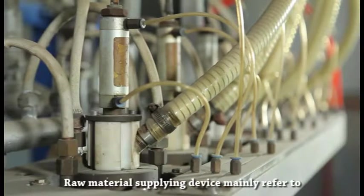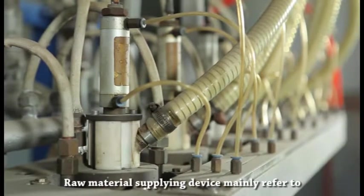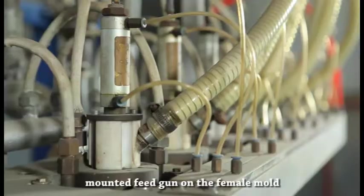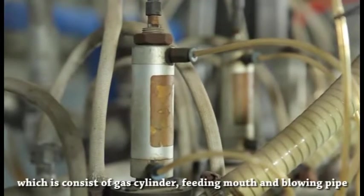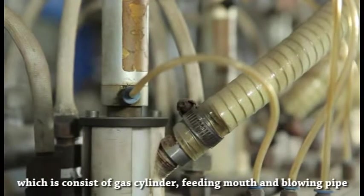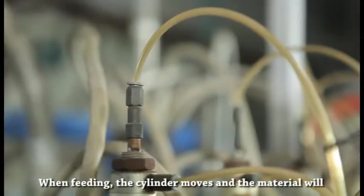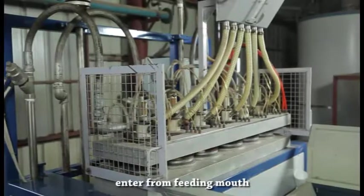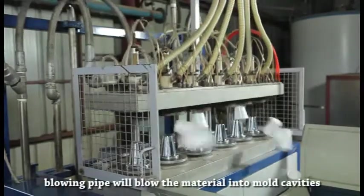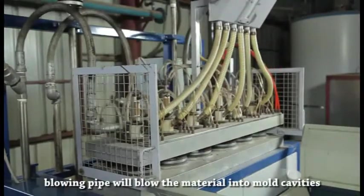The raw material supplying device refers to the mounted feed gun on the female mold, which consists of gas cylinder, feeding mouth, and blowing pipe. When feeding, the cylinder moves and material enters from the feeding mouth. The blowing pipe blows material into mold cavities.